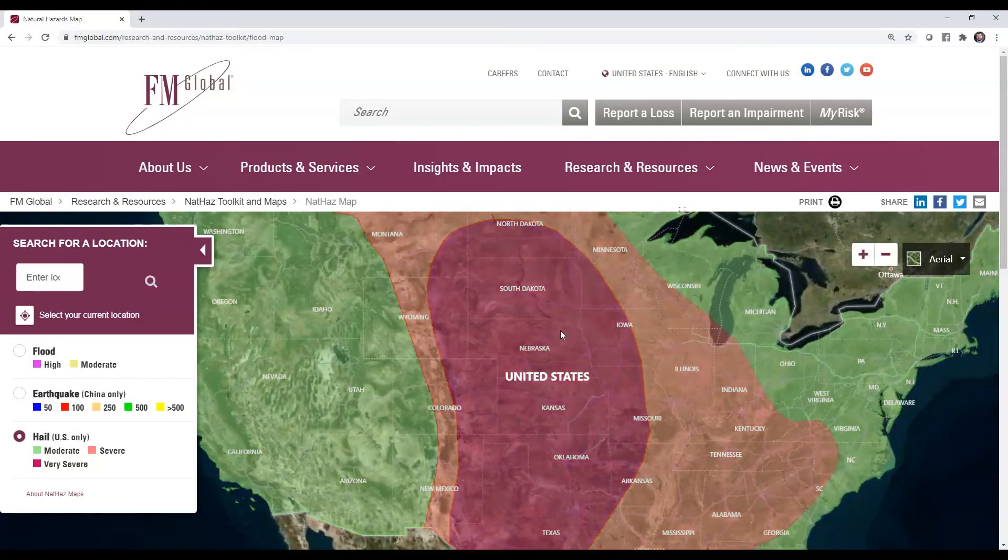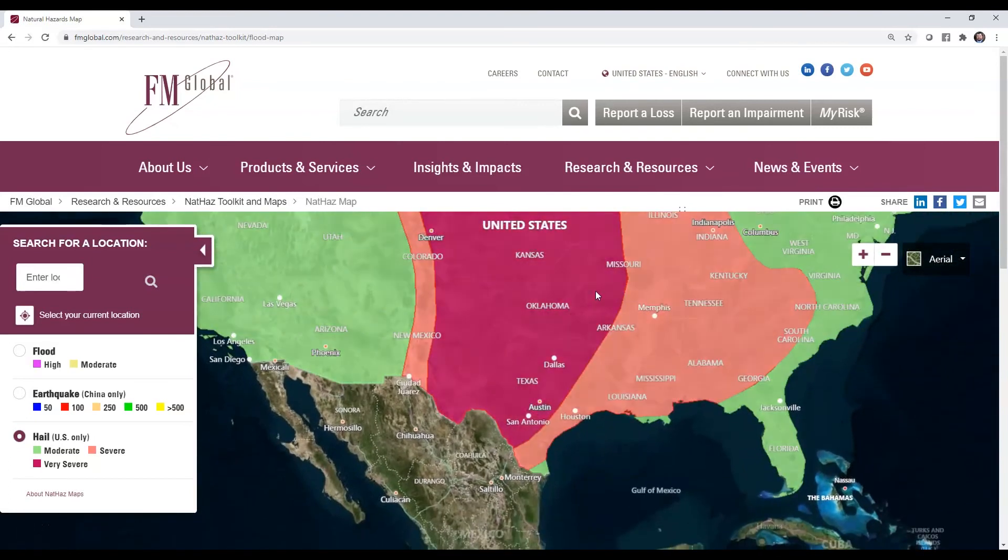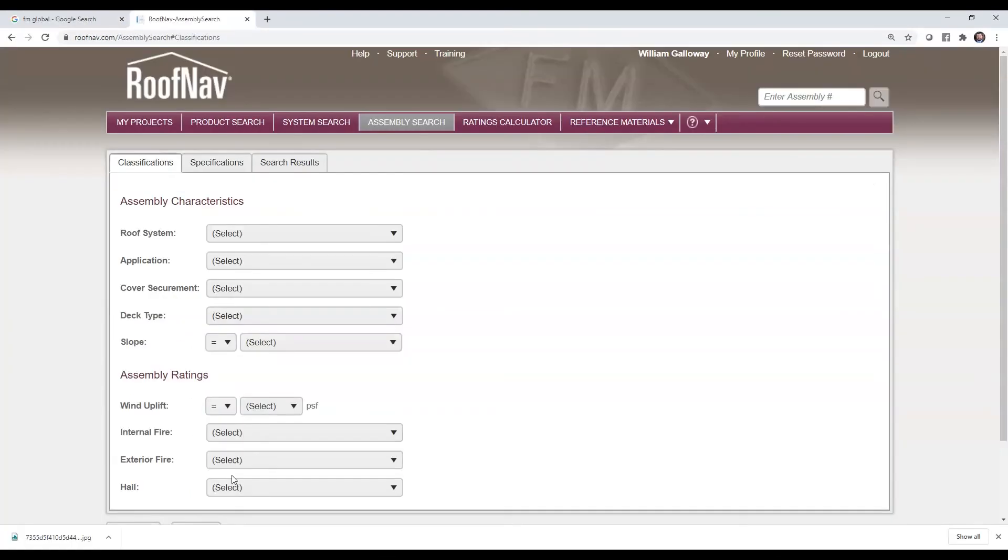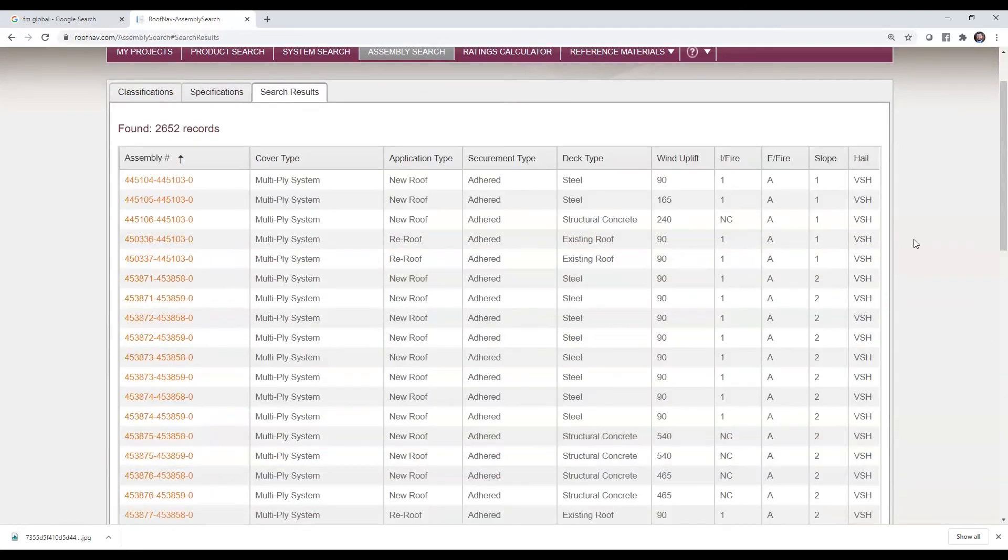FM requires a Very Severe Hail rating for roofs installed in areas of the U.S. exposed to extreme hail. The VSH approved roofing can be found online in the FM RoofNav database.